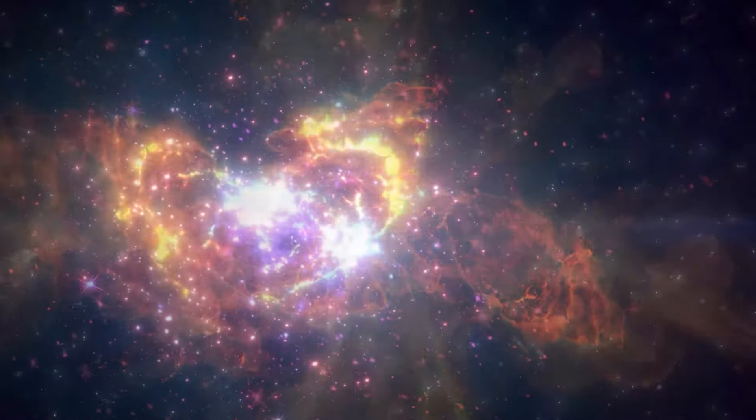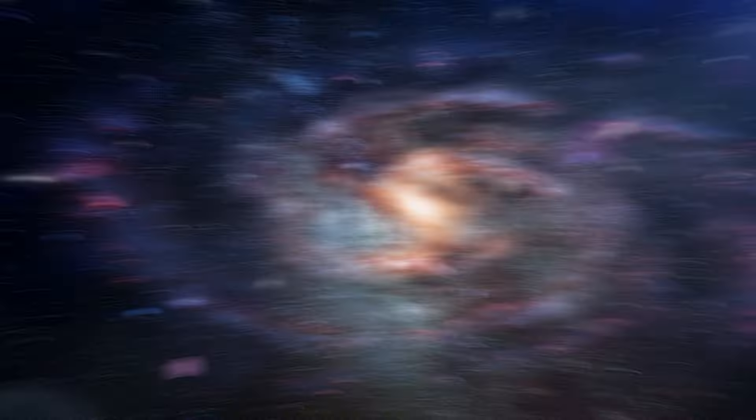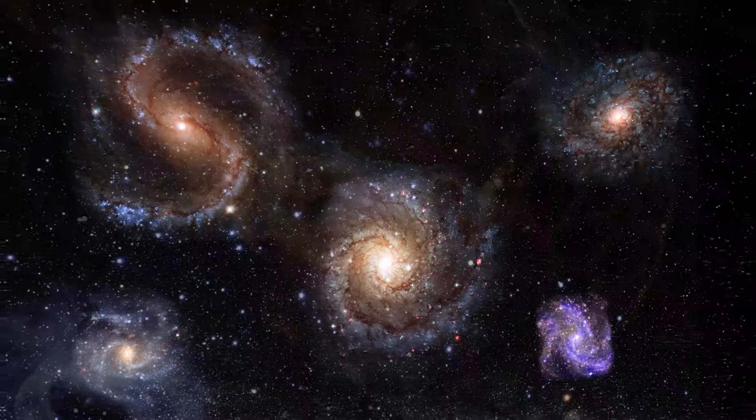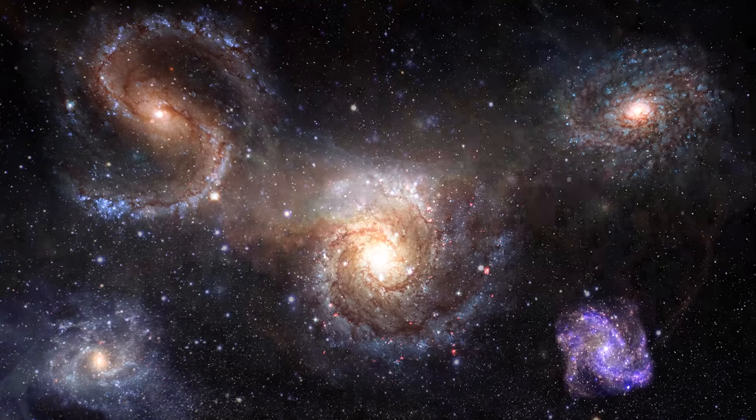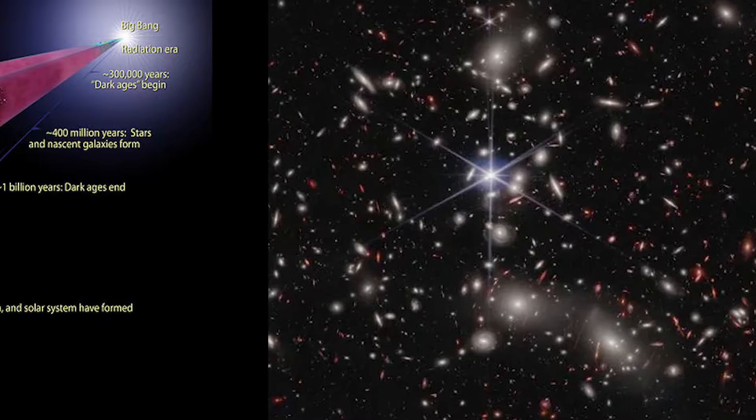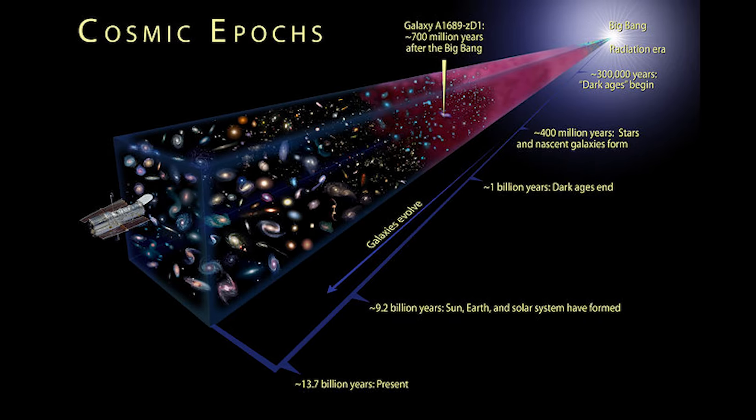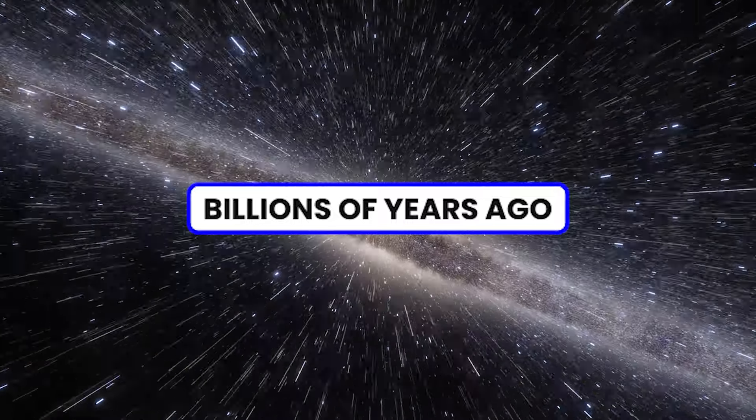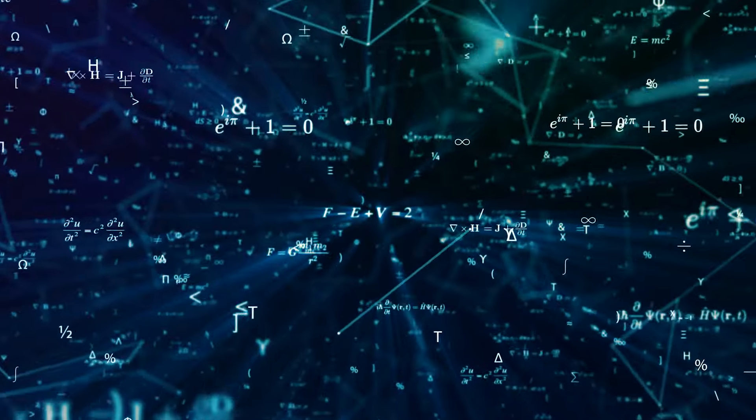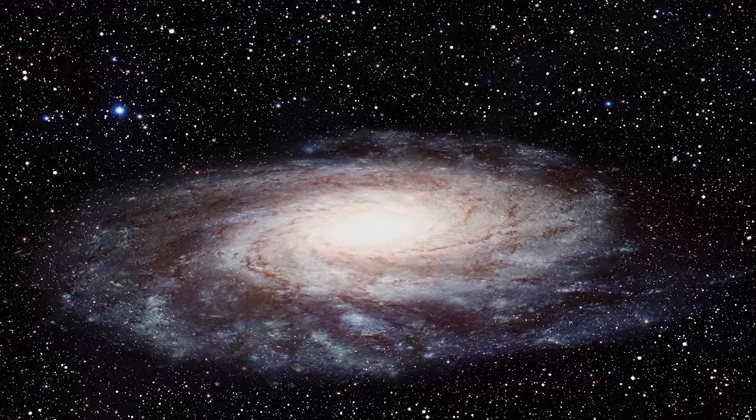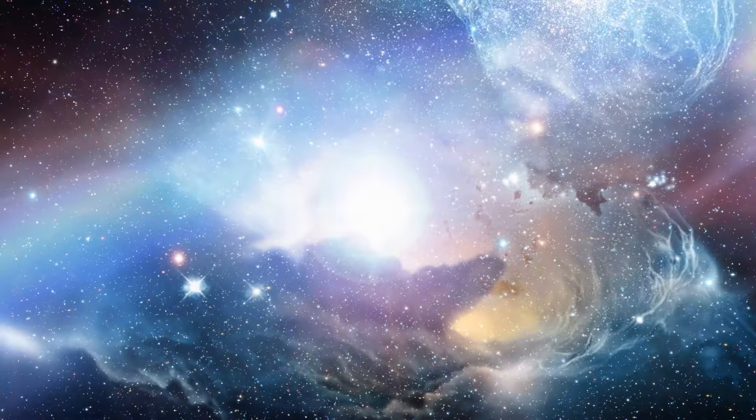At the heart of this revelation lies a mystery: anomalies that defy our current understanding of how galaxies formed and evolved in the early universe. Each pixel in this image represents a cosmic epoch, a snapshot frozen in time billions of years ago. Could it be that our theories about the birth and growth of galaxies are fundamentally flawed?